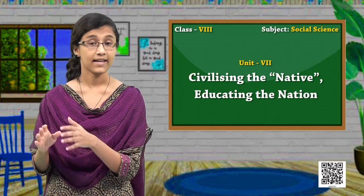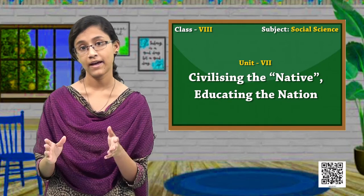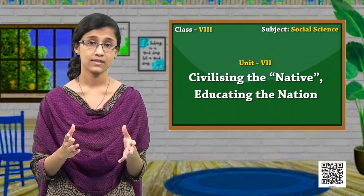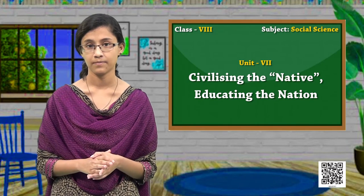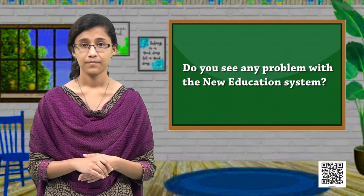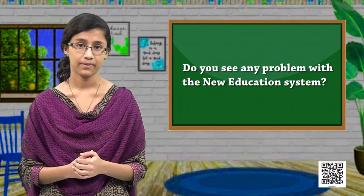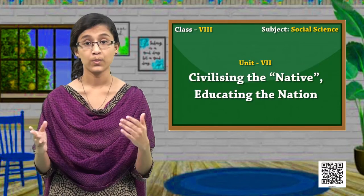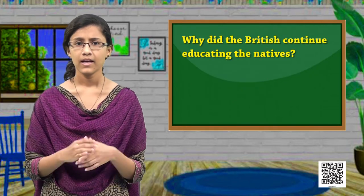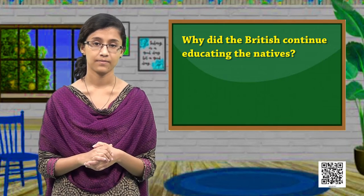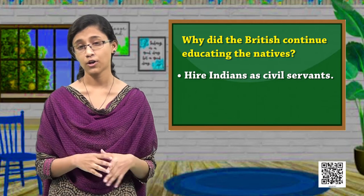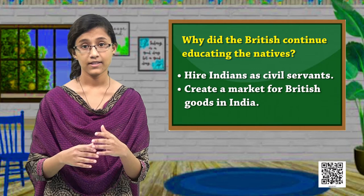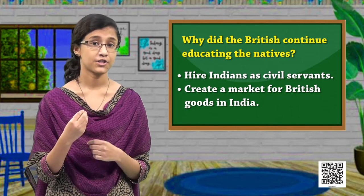Pathshalas that accepted the new rules received government grants and support, while those that did not found it hard to compete with the aided schools. Under the new system, all students had to attend regular classes, sit in allotted seats, study from textbooks, and prepare for annual examinations. However, regular fees and attendance requirements made it difficult for poor and farming families to attend. The new education system could not reach everybody. The British continued this despite its limitations because they wanted to hire Indians as civil servants and create demand for British goods by shaping British tastes among Indians.